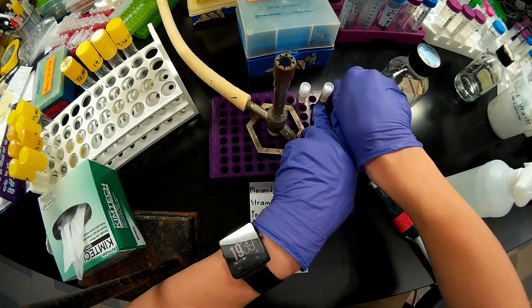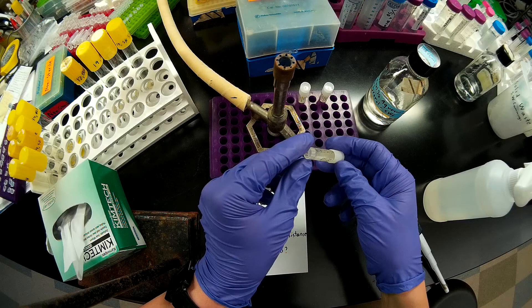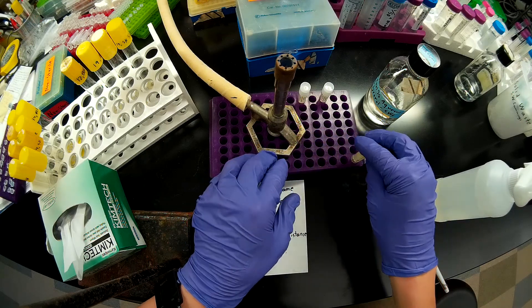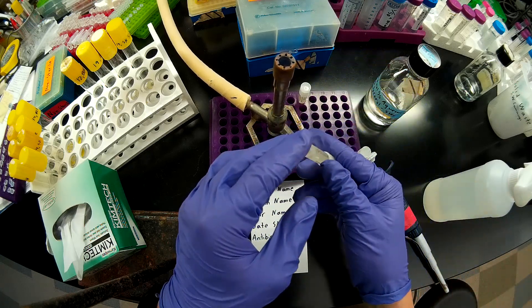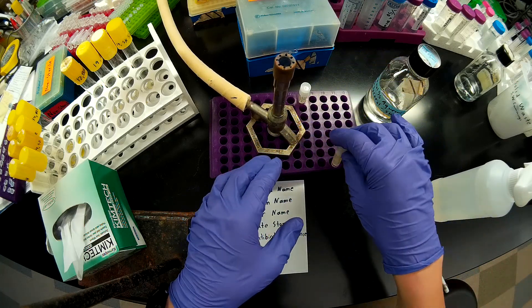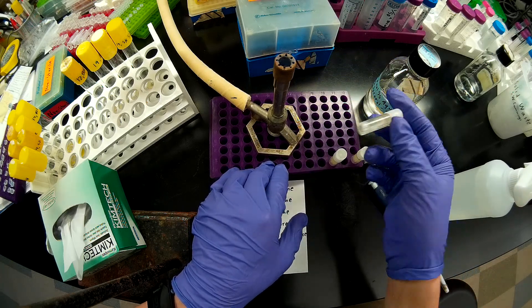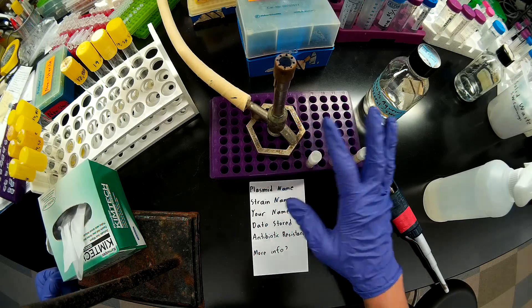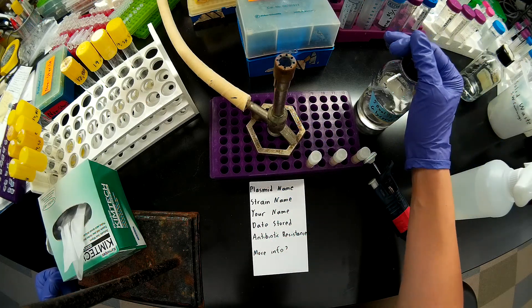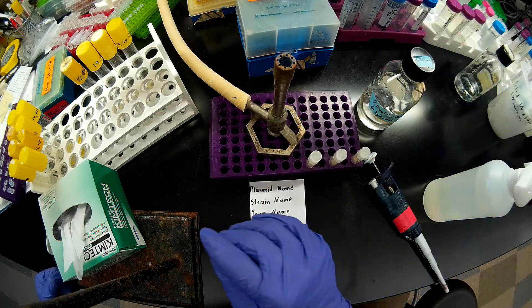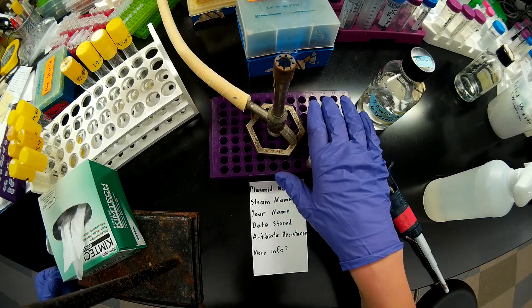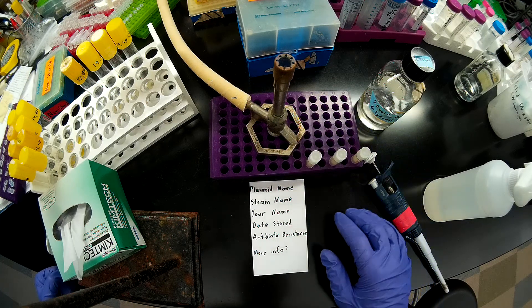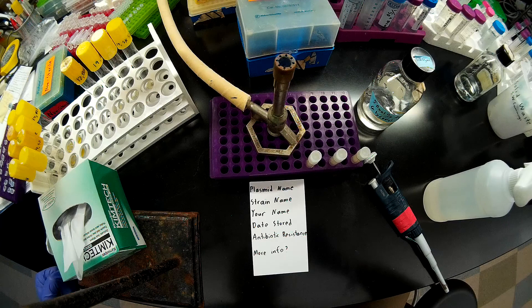So once you've mixed the glycerol with the bacteria, you just want to rock your cryovial back and forth a couple times. And then before you put these in the minus 80, I would give them just a couple minutes to allow the glycerol to permeate into the cells to prevent ice crystal formation, which will prevent the cells from breaking. That's the purpose of adding the glycerol. By adding glycerol to the growth medium, you slow or prevent the formation of ice crystals, which may rupture your cells. And I think that's it. Thank you for watching.